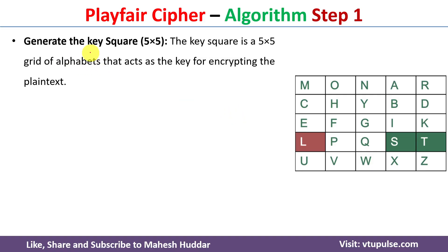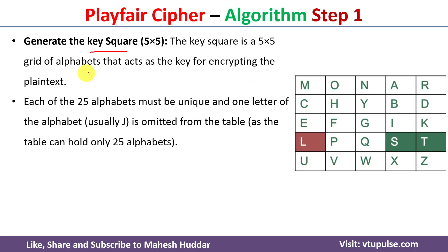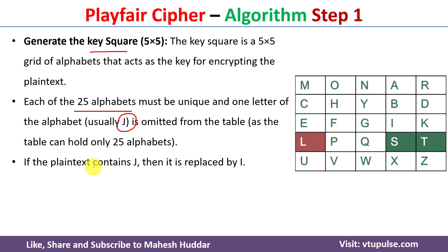In the first step, we generate the key square. The key square is a 5 by 5 grid of alphabets that acts as a key for encrypting the plaintext as well as decrypting the ciphertext. The grid has 25 places, so we can place 25 alphabets, but English letters have 26. So we need to omit the letter J, and whenever the plaintext contains the letter J, we need to replace J with I.